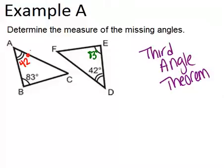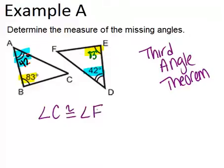So those angles will be 42 and 83. Now, to find the missing angles, we know that because two pairs of angles are congruent already between the two triangles, that means the third angles, C and F, must also be the same. So angle C is congruent to angle F.